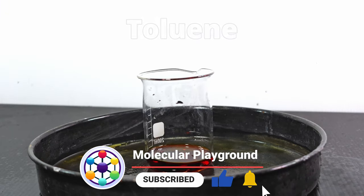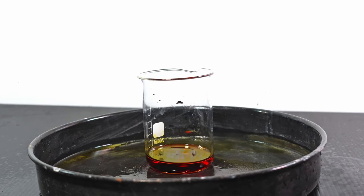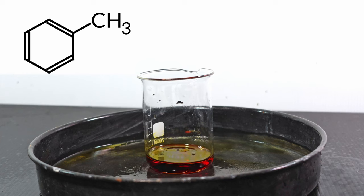For the fifth test, I react toluene with chromic acid. As you can see, nothing really happens. That is because toluene is just benzene with a methyl group.